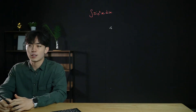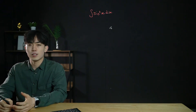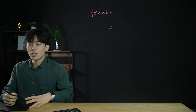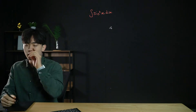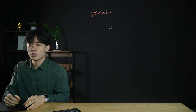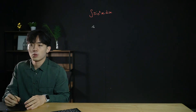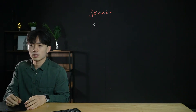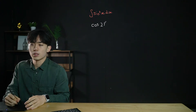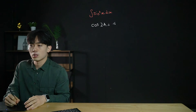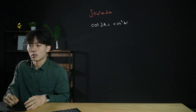First of all we're going to look at sine squared x. For sine squared x, similar to cos squared x, we're going to have to use the double angle formula and more importantly the cos 2a formula. We know that cos 2a is equal to cos squared a minus sine squared a.